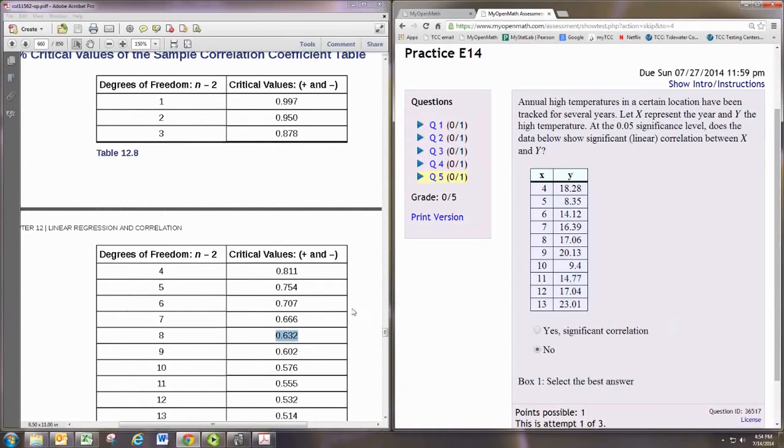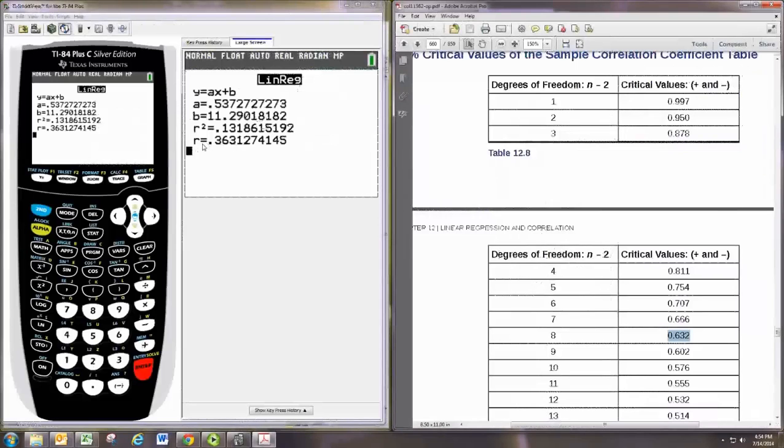Now you may get problems where the correlation coefficient is negative and you'll notice that all these numbers are positive, so you'll never get a negative number to be larger than the positive. If you calculate a negative value for r just remove the negative sign and compare it the same way. These are always positive here. So make it positive and then it must be bigger than these critical values. You want it to be closer to 1.